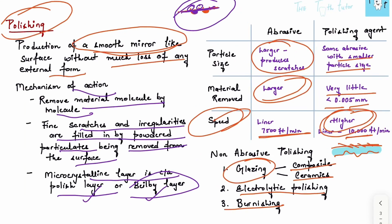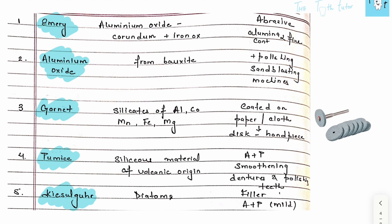Now talking about the abrasion and polishing agents. There are 15 agents mentioned in the textbook. I'll give you the names, what they contain, and their uses. You don't have to remember all of them - just five to seven will be sufficient for your short note. First, we have emery, one of the oldest materials. It's mainly aluminum oxide, specifically aluminum oxide called corundum.